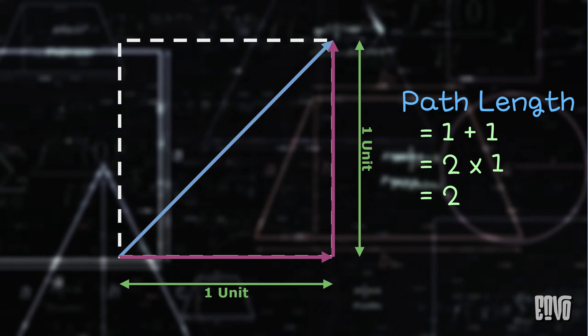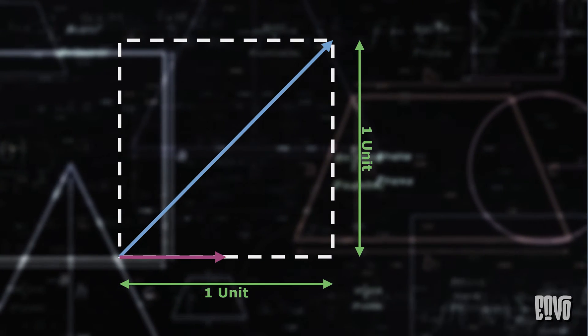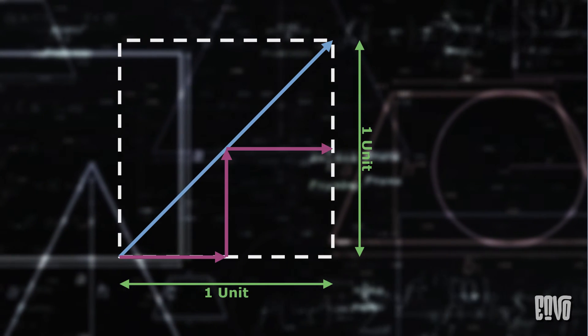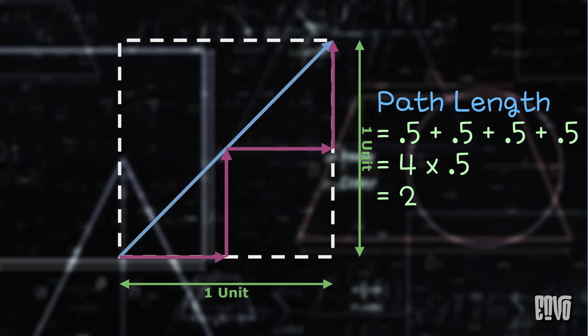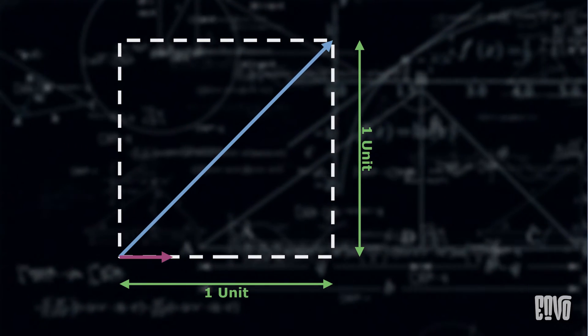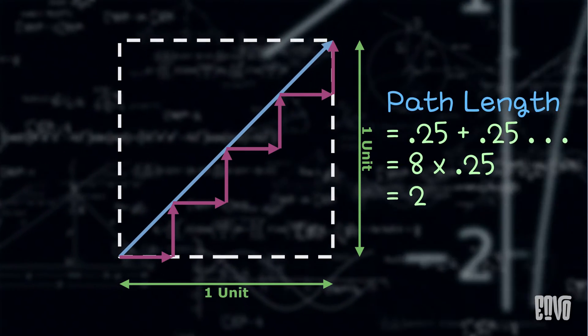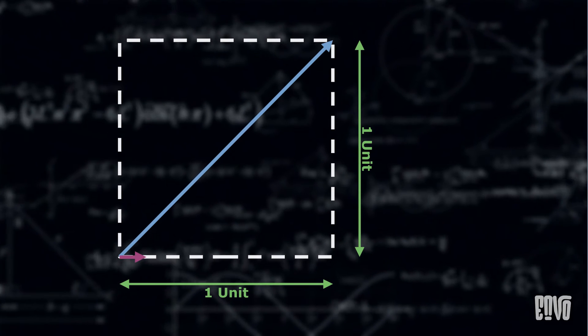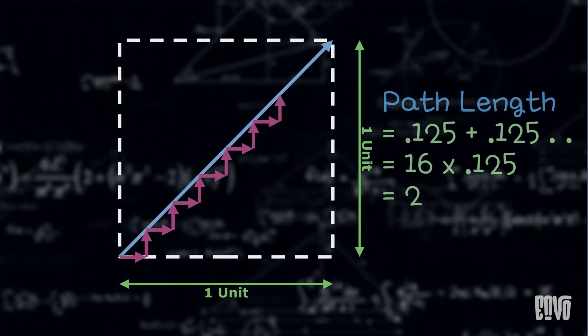What if we divide each of those large steps in half? We go 0.5 units right, 0.5 units up, 0.5 units right, and 0.5 units up. The total path length is still 2 units. Let's keep dividing these steps. Imagine taking thousands, millions, even an infinite number of tiny horizontal and vertical segments. Each time, the staircase gets smoother, looking more and more like the diagonal line.